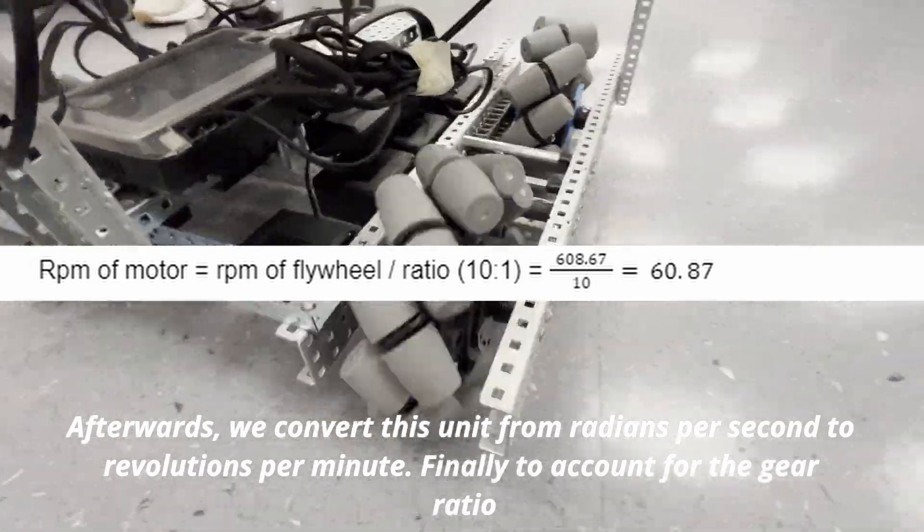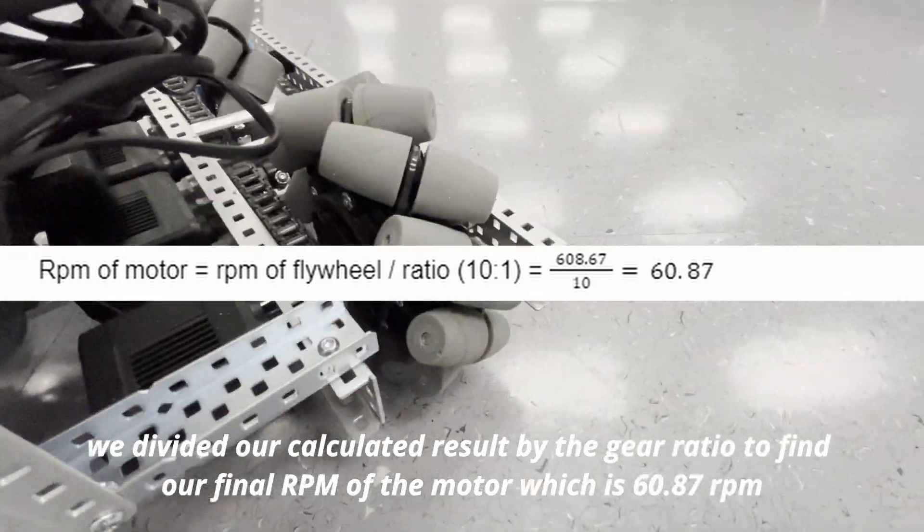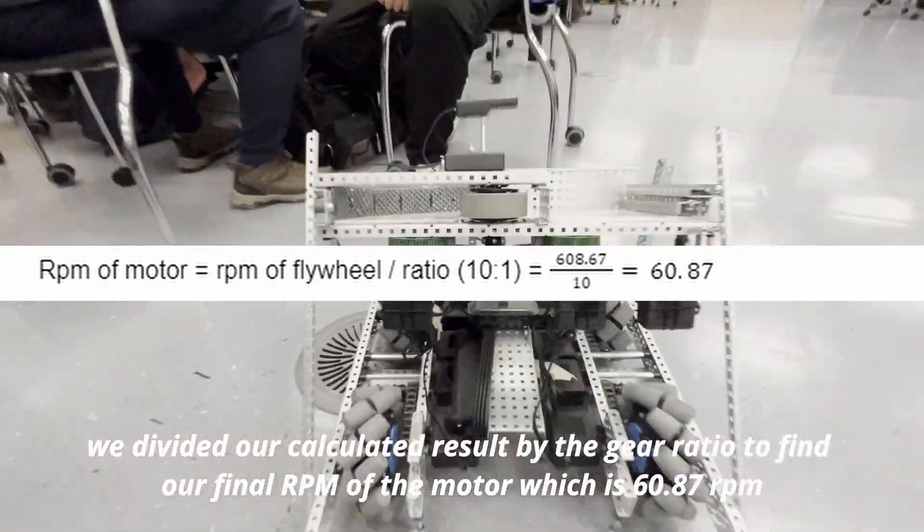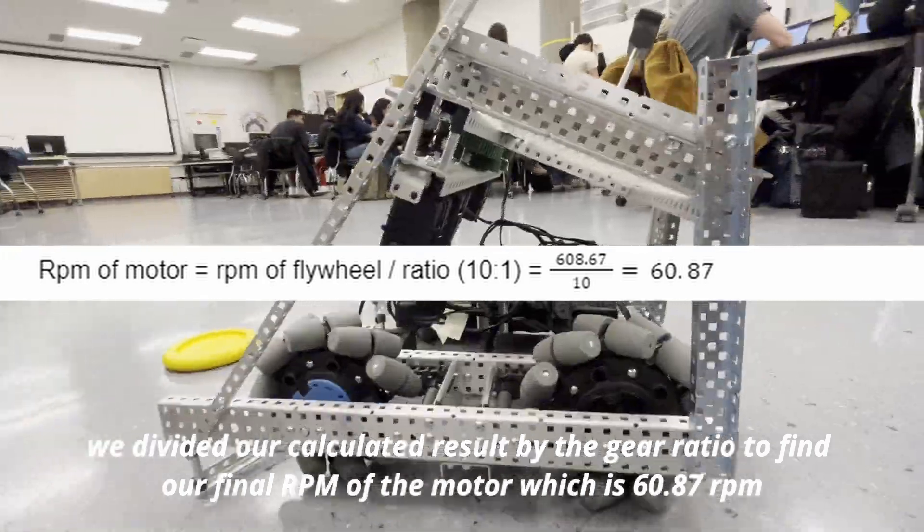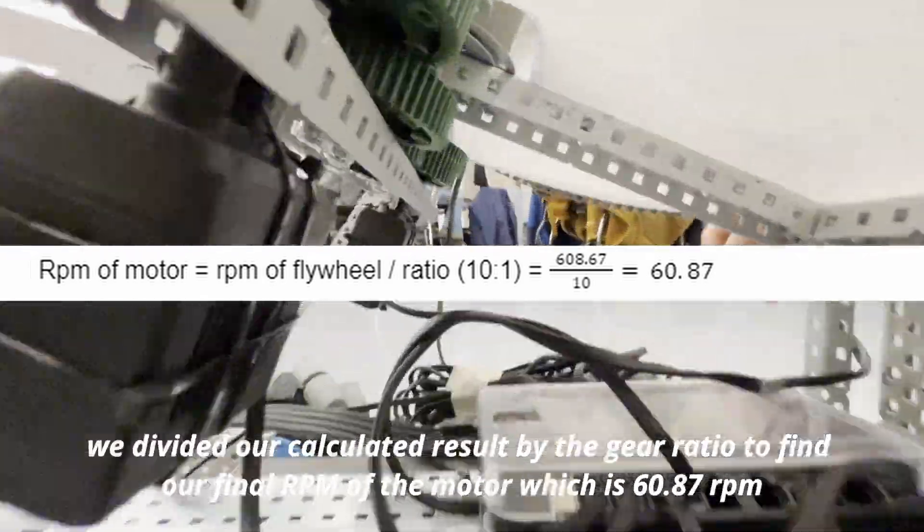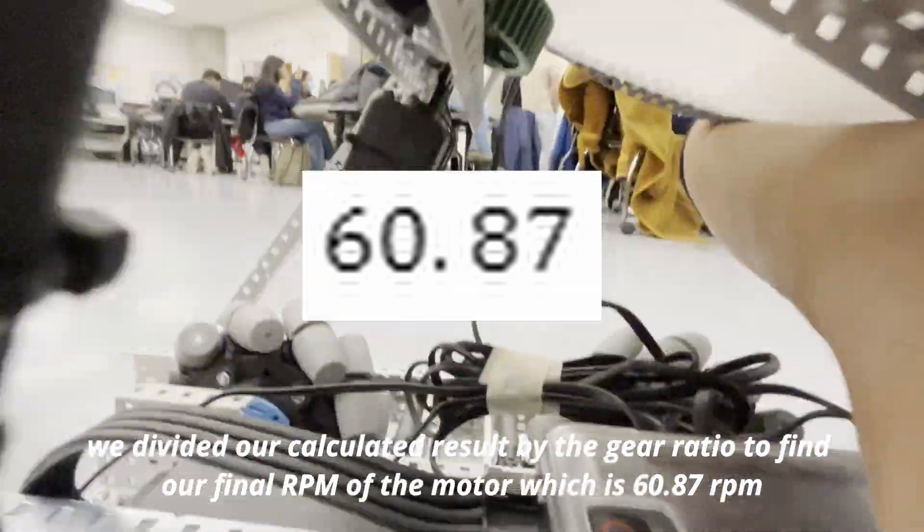Finally, to account for the gear ratio, we divided our calculated result by the gear ratio to find our final RPM of the motor which is 60.87 RPM.